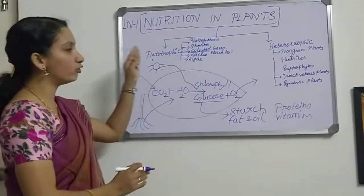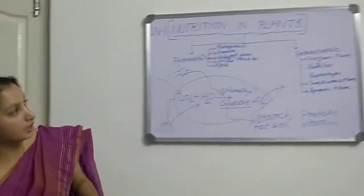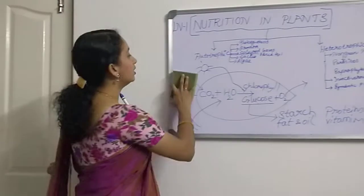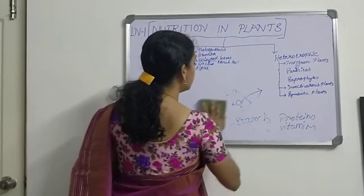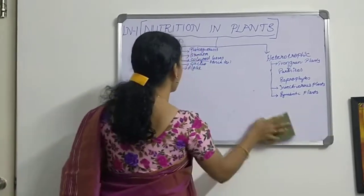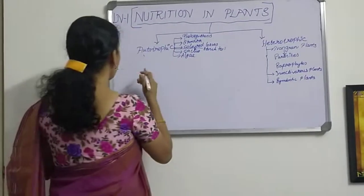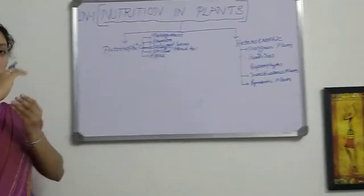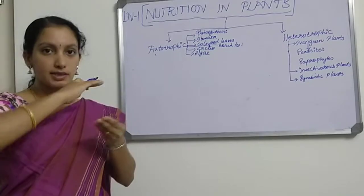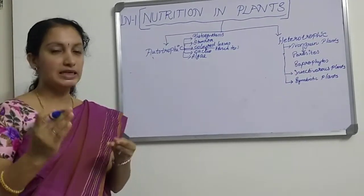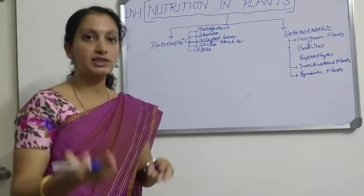This is about photosynthesis — the first topic is covered. Moving to the next one: What is stomata? What is the difference between stomata and stoma? We have small or tiny pores on the surface of the leaf which help the plant to exchange gas.